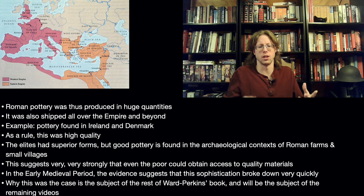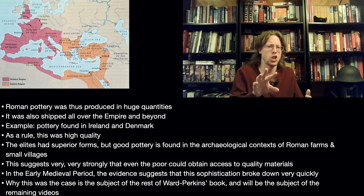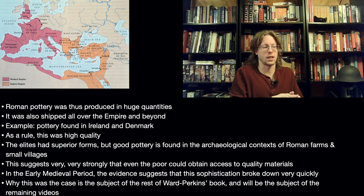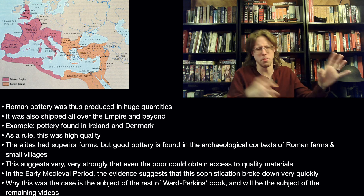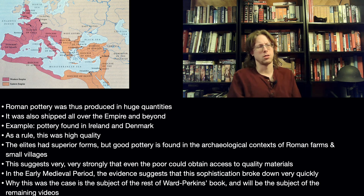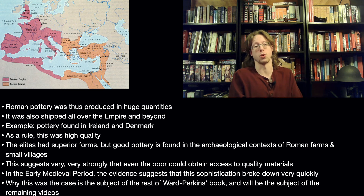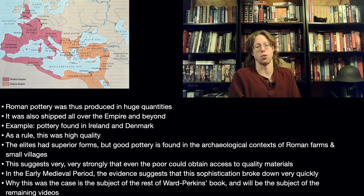In the early medieval period, the evidence suggests that this sophistication broke down quickly. I don't know about hard numbers, but archaeological field reports — if you're on an archaeological site where you see photographs — you can't help but be struck by barrels and barrels of Roman stuff, to the point where it's basically just Roman garbage. And then a couple of boxes from the early medieval period. So we know the scale broke down. Why this was the case is the subject of the rest of Ward-Perkins' book and will be the subject of the remaining videos.